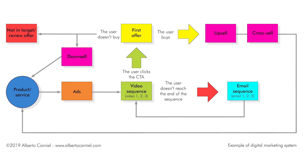If the user doesn't finish the sequence, an automated system moves them into another mailing list and tries to bring them back to the video sequence. If they still don't take the bait, it means the user is not in target or the offer must be reviewed. If the user finishes the video sequence and clicks the final call to action, they are ready to receive the first offer. If they buy, they become customers and the company can try two different strategies: upsell — trying to sell an upgraded version like a bigger size of french fries — or cross-sell — trying to sell a related product like french fries and a sandwich. For both cases, the loop starts again; customers must be educated, selected, and persuaded to buy.